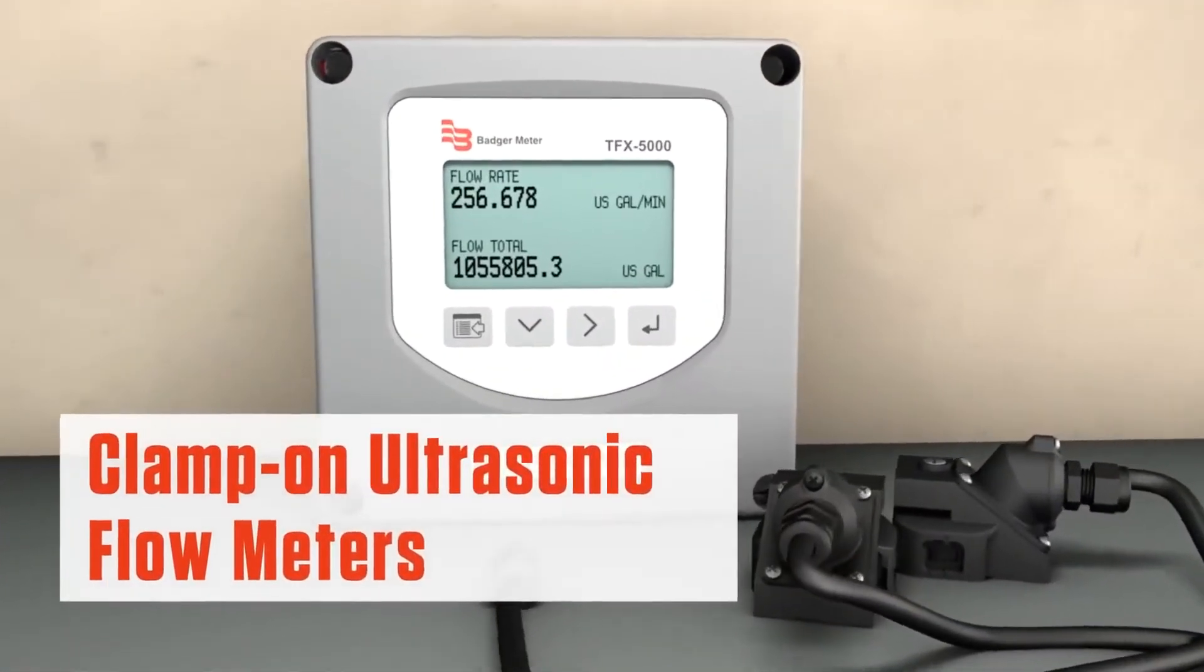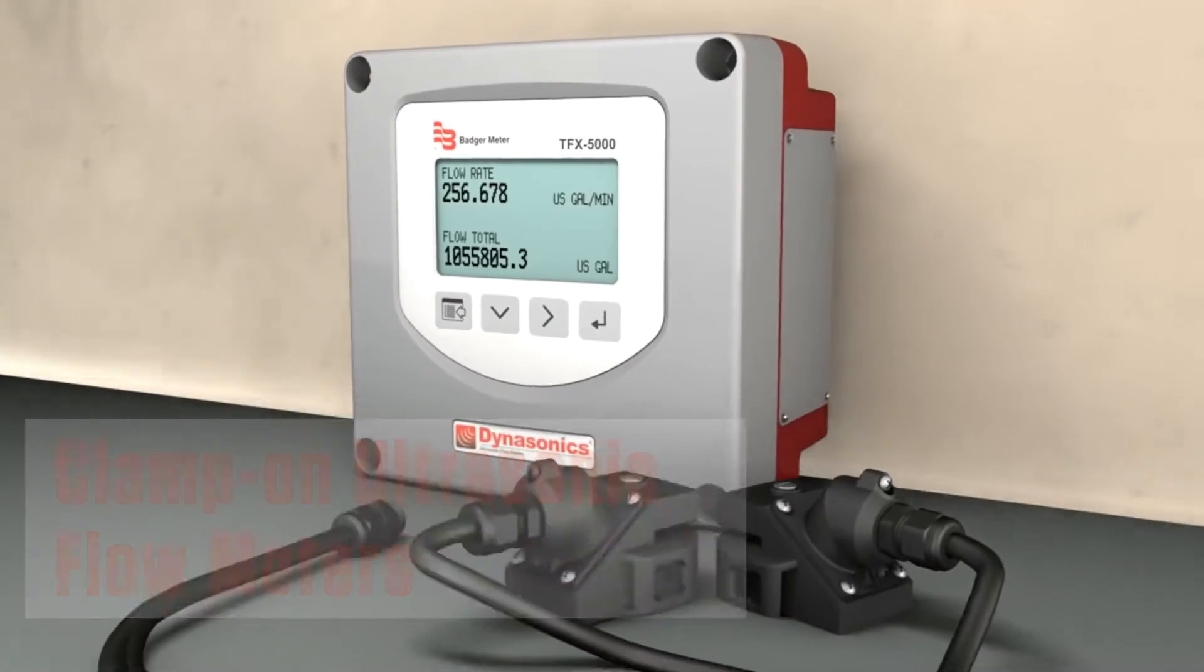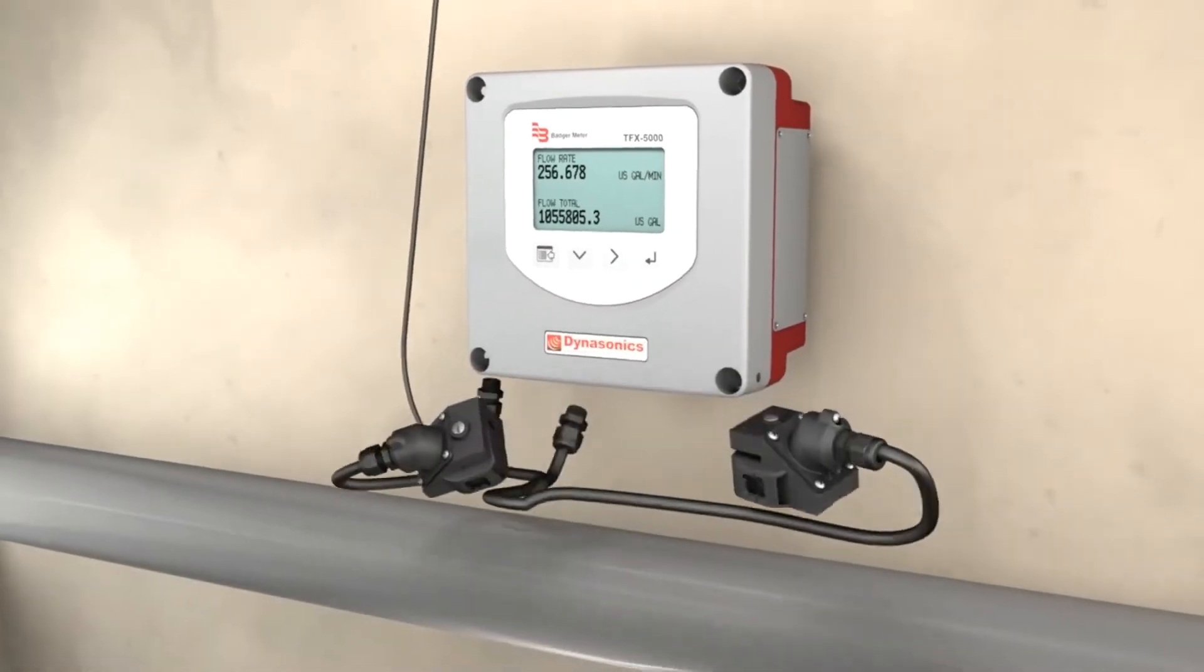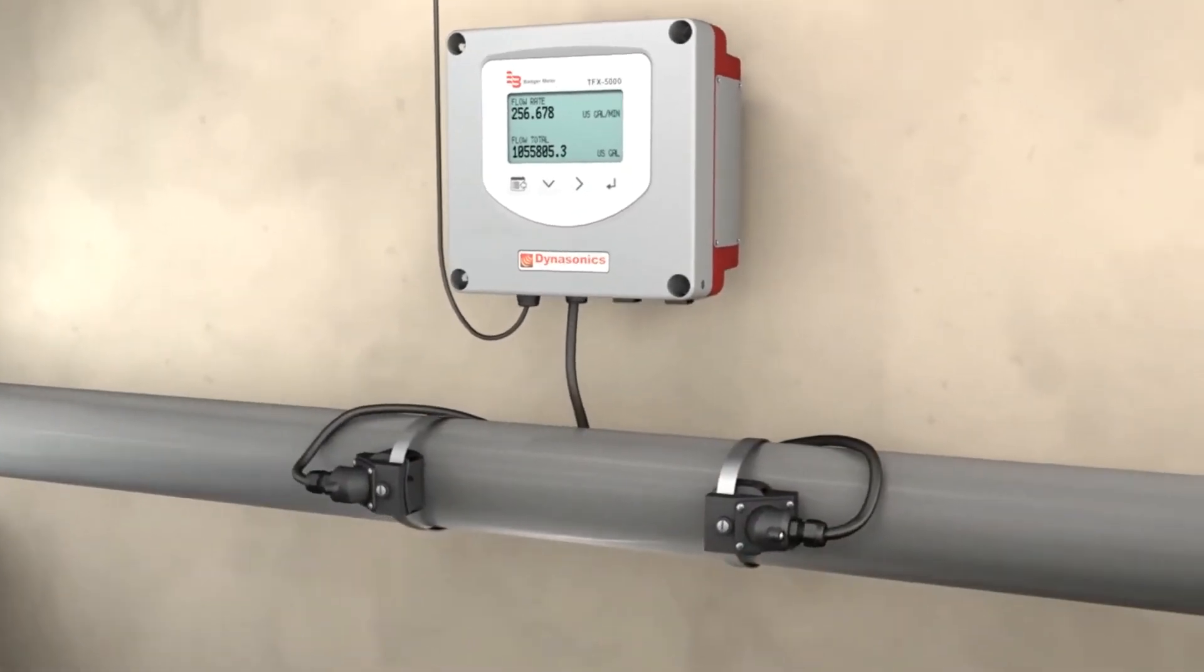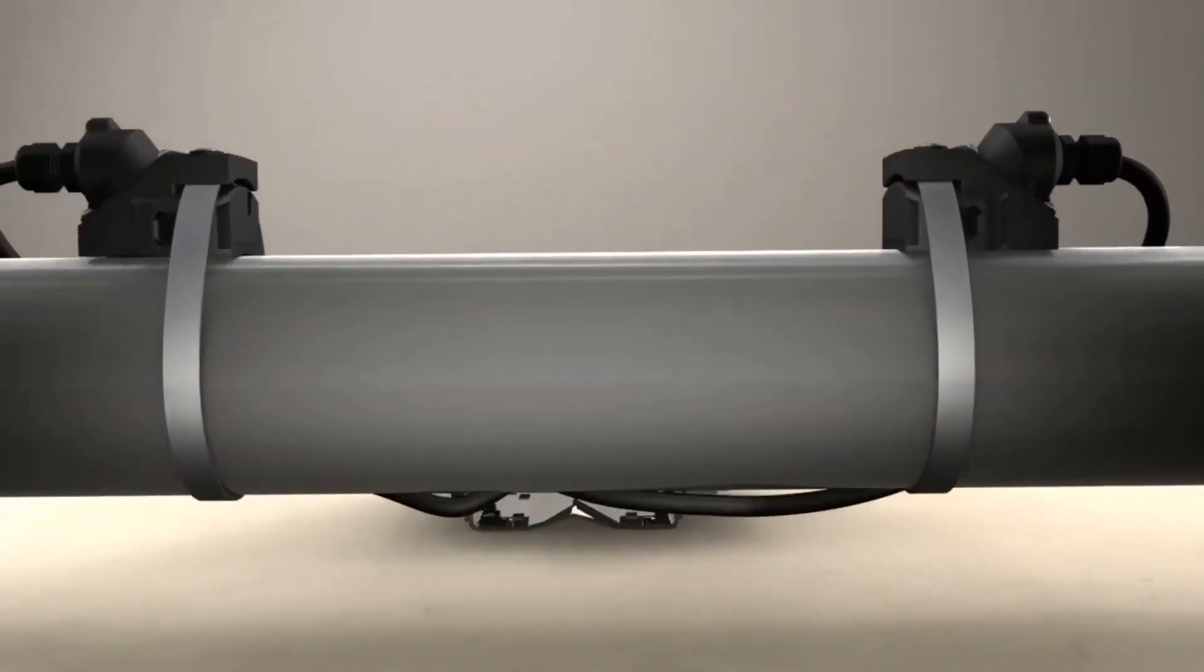Clamp-on flow meters using transit time ultrasonic technology are being rapidly deployed for their versatility. These meters have transducers that mount to the outside of the pipe and use ultrasonic technology to measure the velocity of liquid moving through the pipe.